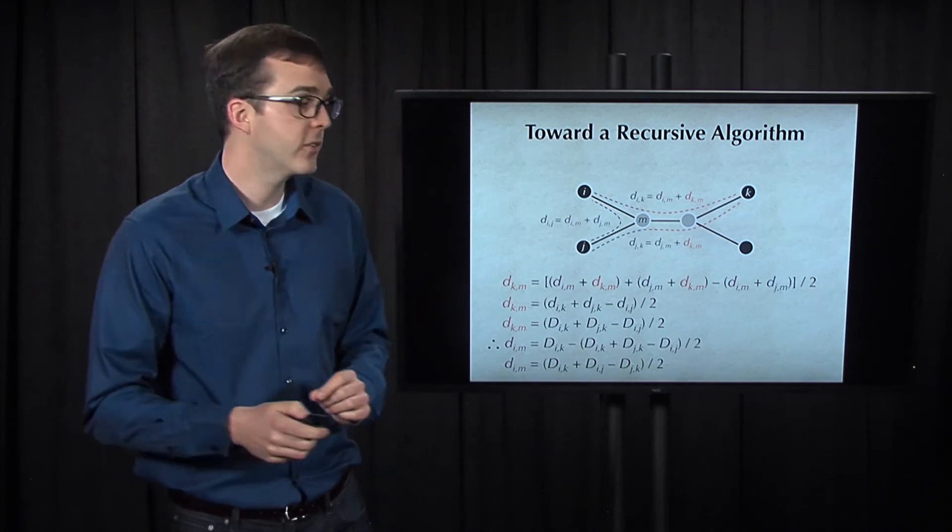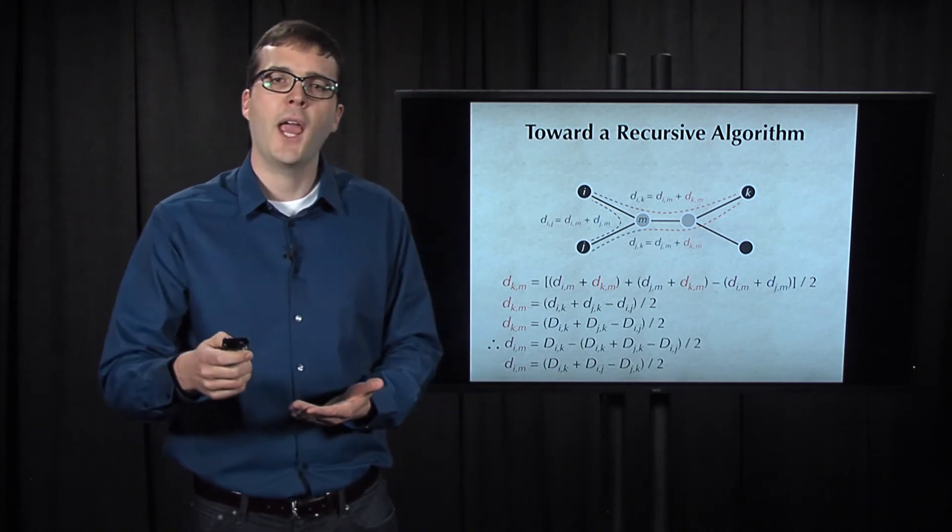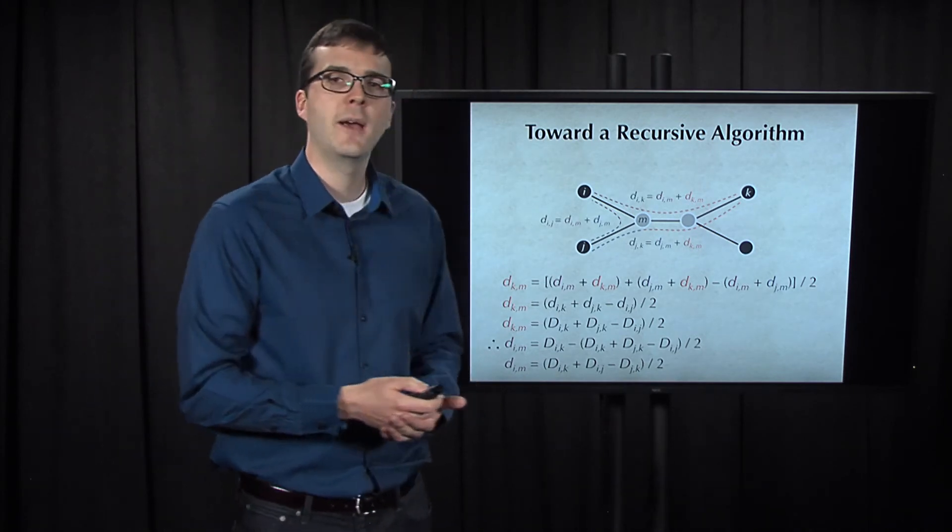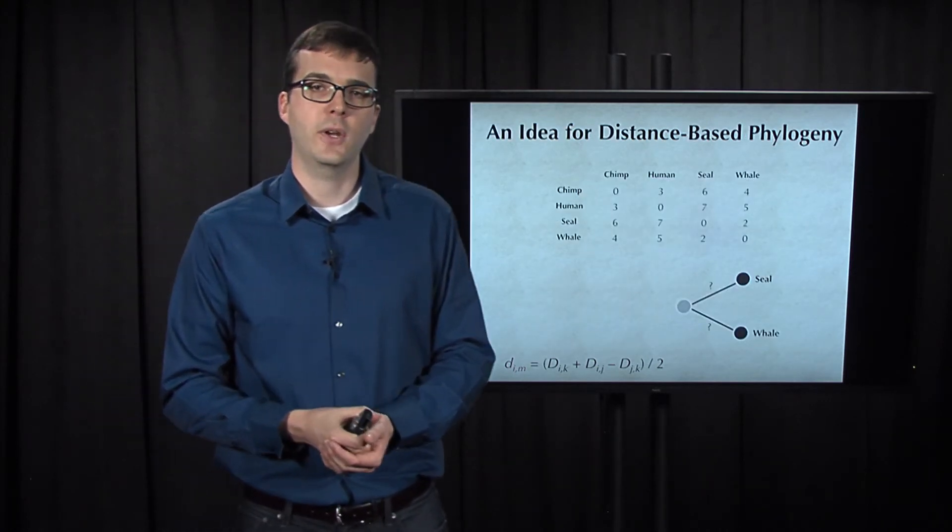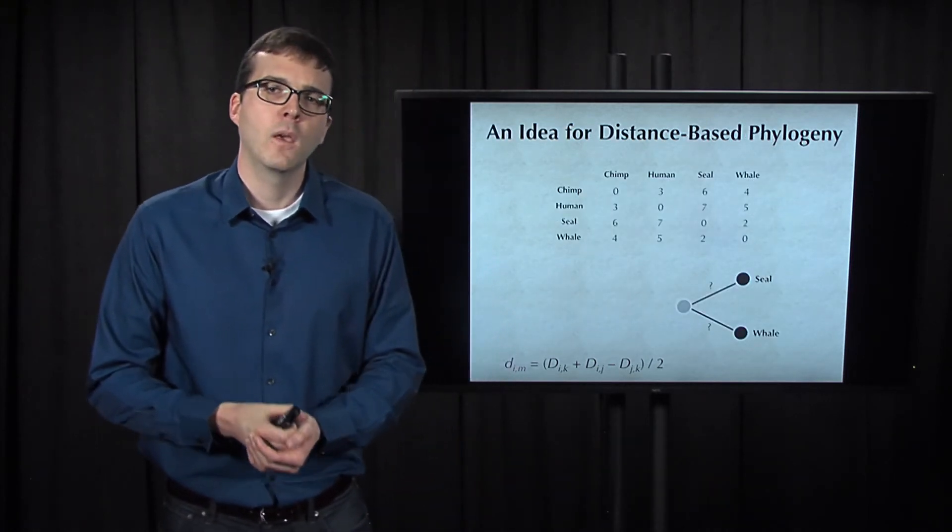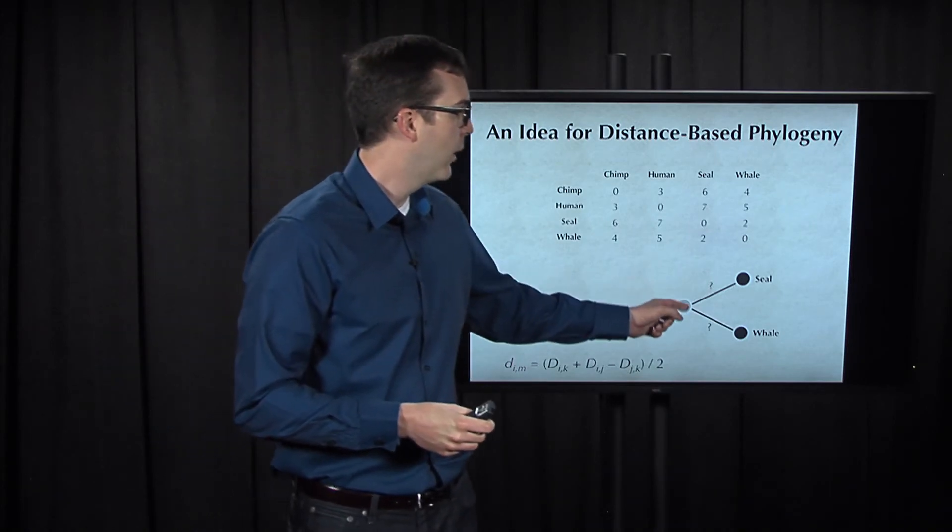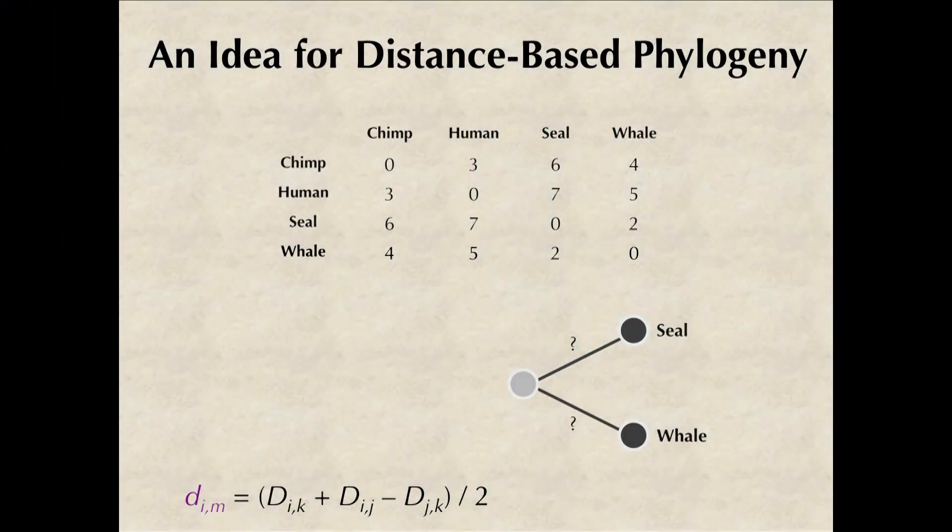So let's take this formula for the distance from a leaf to its parent and return to where we were in our attempt to reconstruct the tree that fits our toy distance matrix. We know that the sum of the two question marks is equal to two. But now we can use our formula.